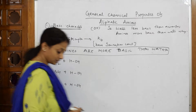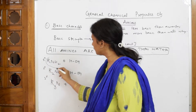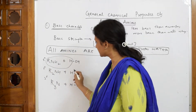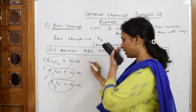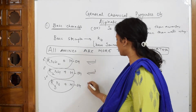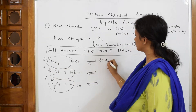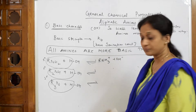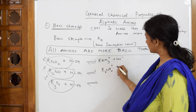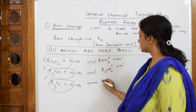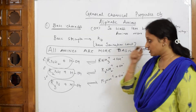Observe what happens when an amine is dissolved in water. The amine tries to break the bond between hydrogen and oxygen in water. The equilibrium products formed are: for primary amine — RNH₃⁺ + OH⁻; for secondary amine — R₂NH₂⁺ + OH⁻; for tertiary amine — R₃NH⁺ + OH⁻.